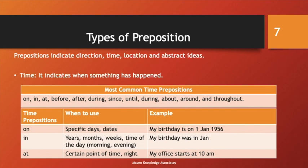The time preposition 'on' — when do we use this? When we are talking about any specific days or dates. For example, 'My birthday is on 1st January 1956.' So here we are talking about a specific date, so in this case we will use 'on'.